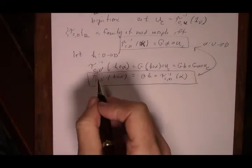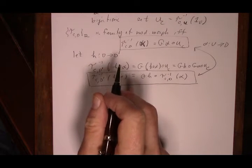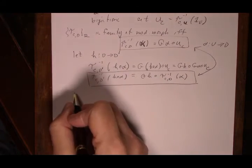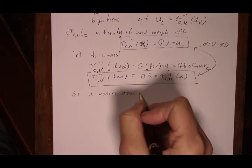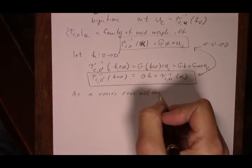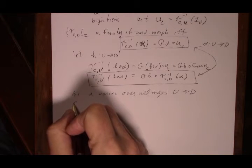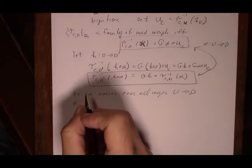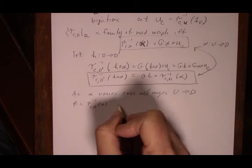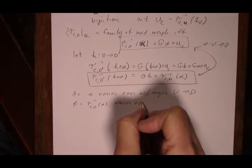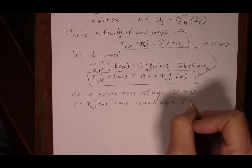So the formula for tau_CD prime of H ∘ alpha shows how to pull H out in front of tau inverse. These two forms are equivalent — I'll let you sort that part out. Since the tau_CD maps are assumed to be bijections, as alpha varies over all maps from U to D, F equals tau_CD inverse of alpha varies over all maps from C to GD.